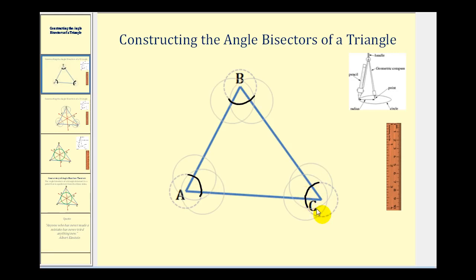You can leave the compass the same or change the radius — I've actually increased the radius a little bit. Now we're going to put the point of the compass at each intersection of the arc and the sides of the triangle and swing another arc in the interior of each angle. So putting the point of the compass here and swinging an arc in the interior of the angle, the arc might look something like this. Without changing the radius, we'll put the point of the compass at this point of intersection and swing another arc in the interior of angle A.